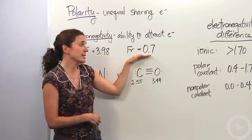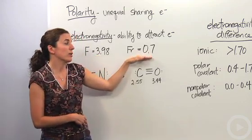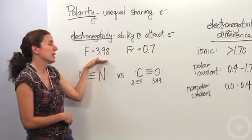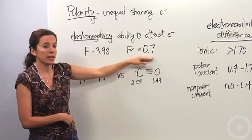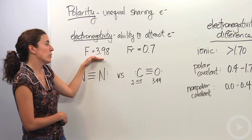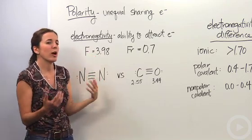So francium has an electronegativity value of 0.7, significantly less. This is the least electronegative atom in the periodic table. This is the most electronegative atom. So how does that actually play a part in polarity?